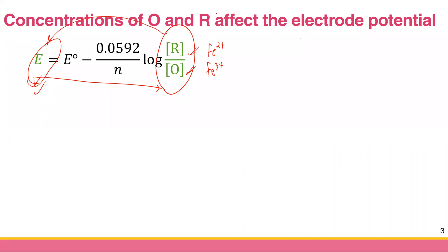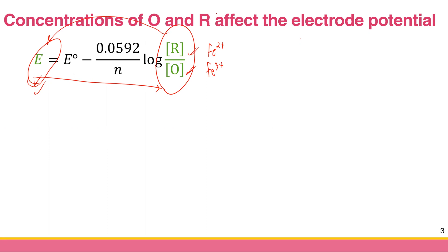This is still based on the Nernst equation: the concentrations of the redox species O and R affect the electrode potential, and that's why we can do potentiometry. Let's consider this figure for a moment.